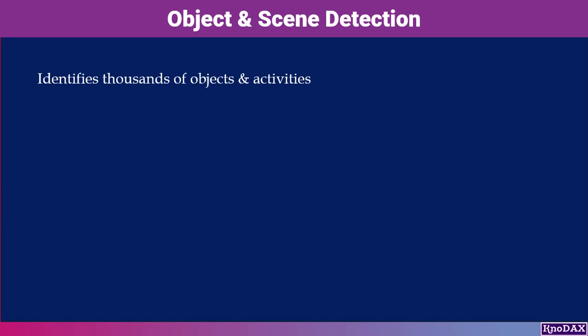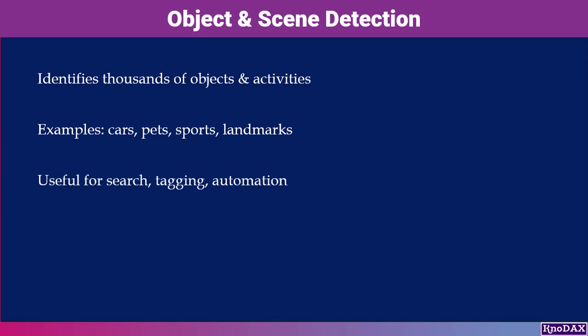With object and scene detection, Recognition can identify thousands of objects and activities. For example, it can recognize cars on a highway, pets in a family photo, or even people playing sports. This is especially useful for automating search and tagging.